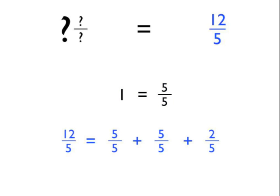So what I've done here is I've taken the twelve fifths and I've actually written it out as an addition sum, where we group as many of these twelve fifths into fives as we can. So I've got five fifths, add five fifths.